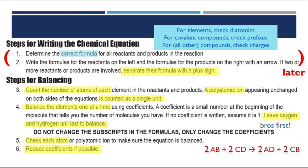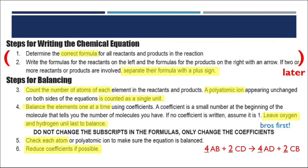For example, if your equation balanced with 2, 2, 2, 2 all the way across, you could reduce by dividing all by 2 to get 1, 1, 1, 1. More likely you'd have something like 4, 2, 4, 2 — which shares a common factor of 2 — and dividing gives 2, 1, 2, 1. You're not wrong with 4, 2, 4, 2, but it's not fully correct and you won't get full credit. Always be on the lookout for ratios you can reduce.